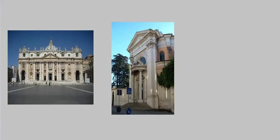Just to give you a little preview, here are two examples of Baroque architecture. On the left is the facade of St. Peter's Basilica by Carlo Maderno, dating to 1607–12. On the right is Santa Andrea al Quirinale by Gian Lorenzo Bernini, dating to 1660. Both of these are in Rome. You don't need to worry about the dates or names — this is just an introduction.